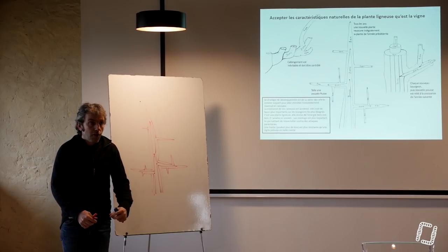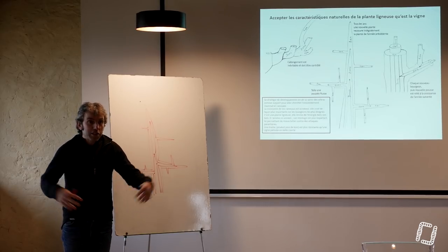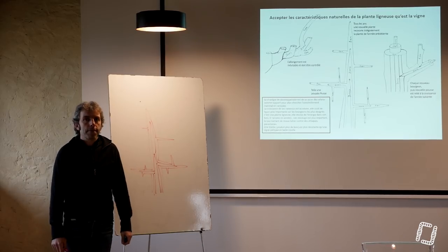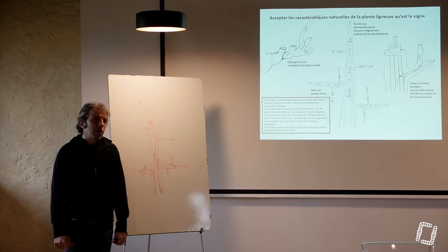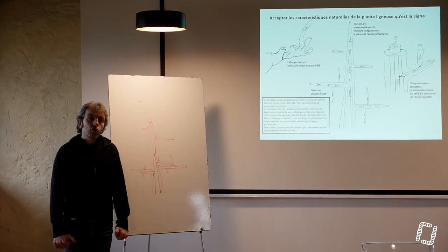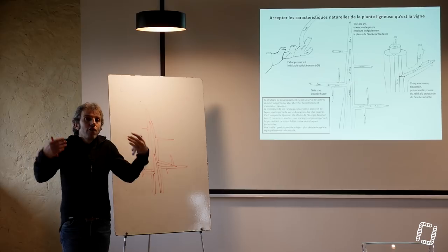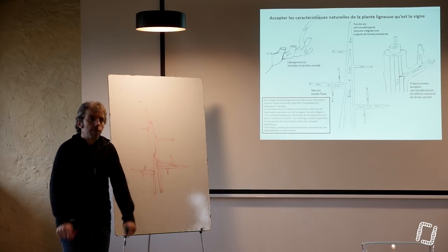Sur votre Sémillon, tous les ans, vous avez un nouveau Sémillon qui pousse intégralement par-dessus votre Sémillon de l'année dernière. Ça, c'est hyper important de comprendre ça. Et c'est un fonctionnement inéluctable des plantes ligneuses. Elles sont obligées de fabriquer des nouveaux vaisseaux tous les ans. Elles sont obligées de fabriquer une nouvelle couche tous les ans.